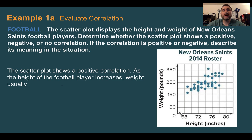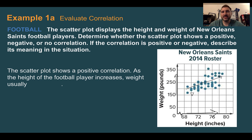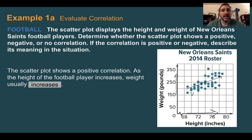Example 1a: evaluate correlation. The scatterplot displays the height and weight of New Orleans Saints football players. Determine whether the scatterplot shows a positive, negative, or no correlation. If the correlation is positive or negative, describe its meaning in the situation. As the height increases, it does appear to be going in the positive direction — slightly going upward. This would be a positive correlation. It's not a very strong positive correlation, but it is positive since the points do appear to be going upward. So as height increases, weight usually increases as well.